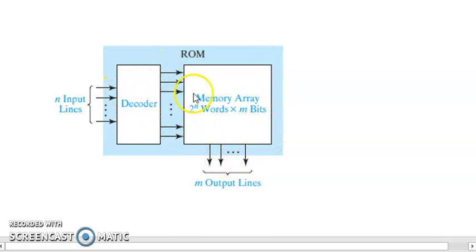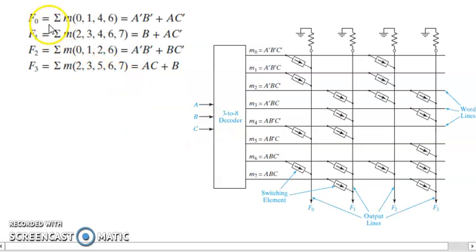A switching element is placed at the intersection of the word line and output line. For example, consider these 4 output functions to implement with a 3-to-8 decoder. Three inputs give 8 minterms, and the memory element outputs 4 bits, which is one word. To realize connections to minterms 0, 1, 4, 6, we place switching elements to make them high.